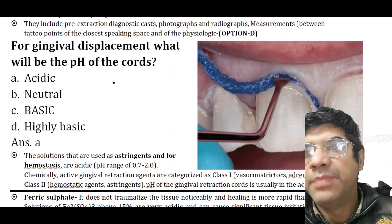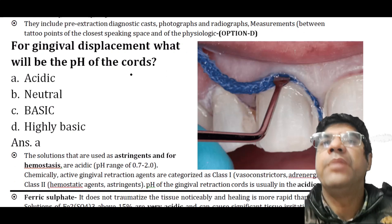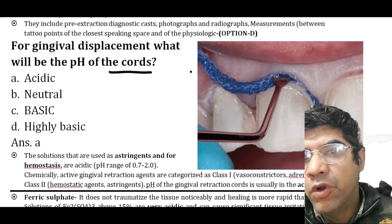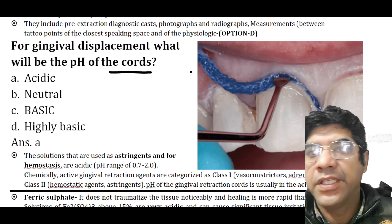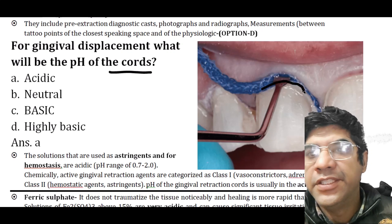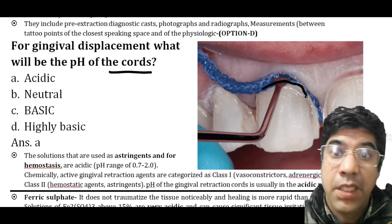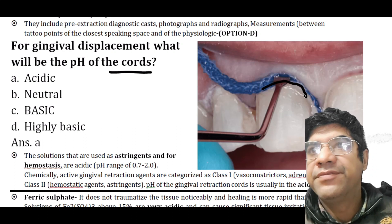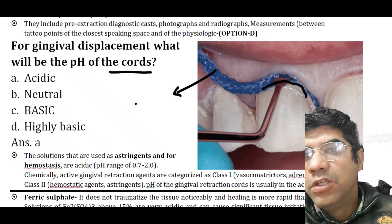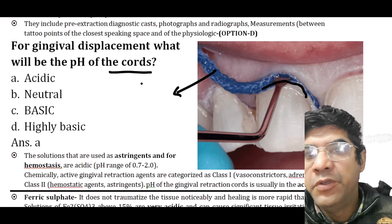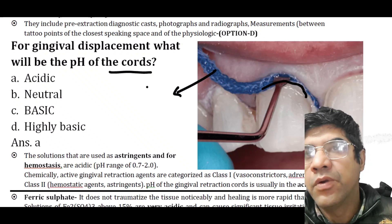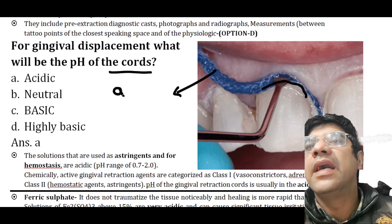For gingival displacement, what would be the pH of cords? Gingival retraction cords are used for displacing the gingival tissue away from the tooth structure, creating space for impression material. The solutions or agents impregnated in the gingival retraction cord are often acidic.